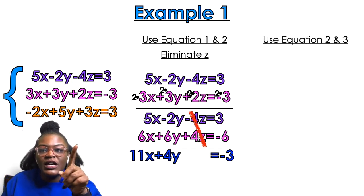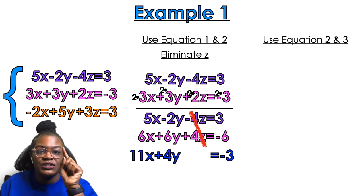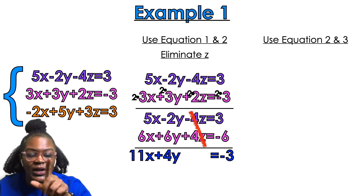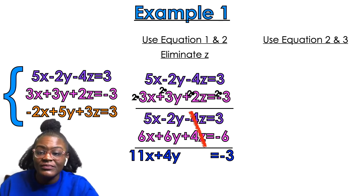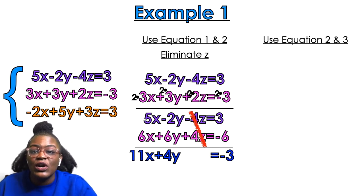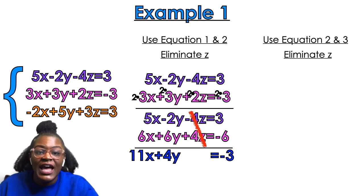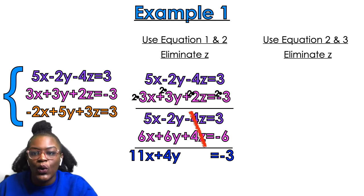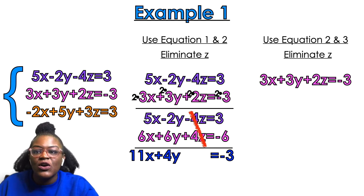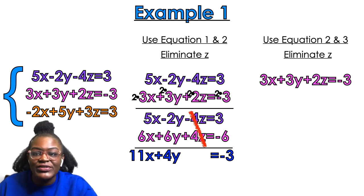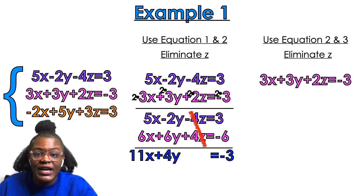Now we're going to use equation 2 and 3 and eliminate z again. So this time we're going to use the pink equation and the orange equation. Looking at the z's, I have a coefficient of 2 and a coefficient of 3.